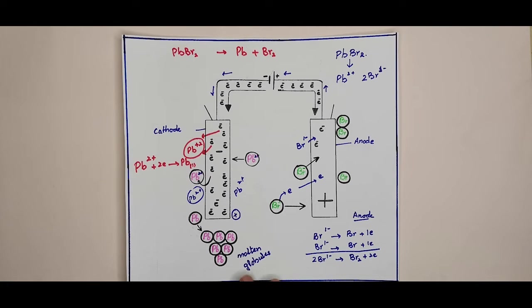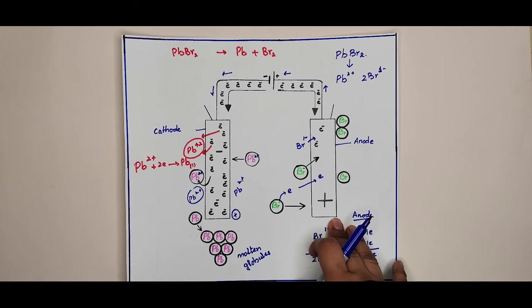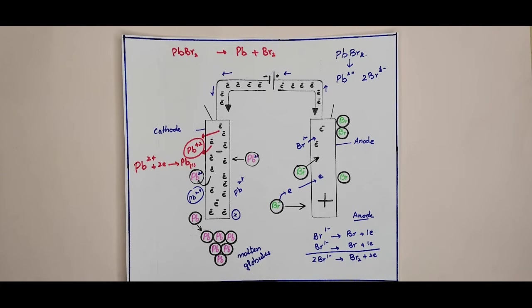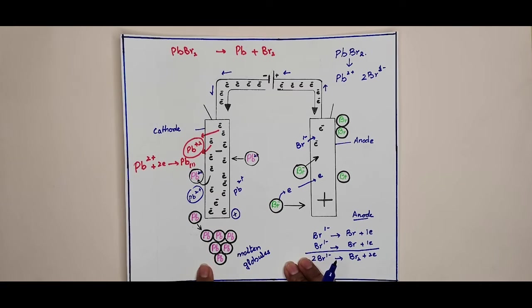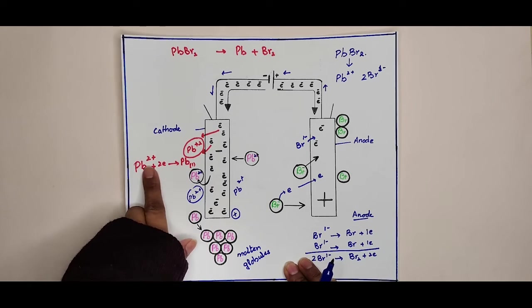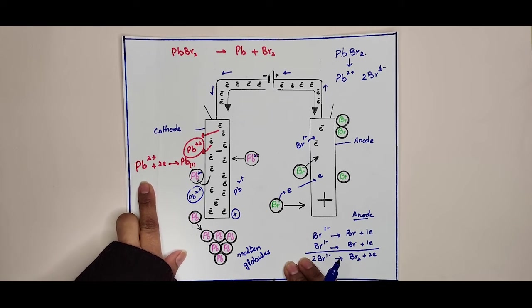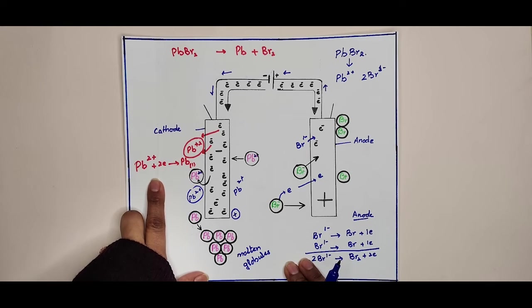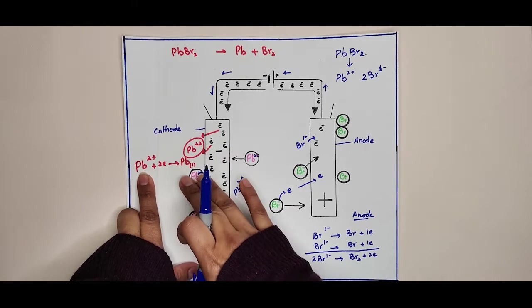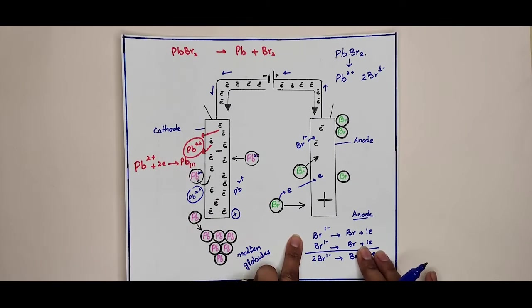The observations are: molten metal (lead) is present at the bottom near the cathode, and reddish-brown gas (bromine) is produced at the anode. When a molten ionic compound is electrolyzed, a metal is discharged at the cathode, coming from the positive ion. The positive ion here is Pb²⁺, which is discharged as lead metal at the cathode.